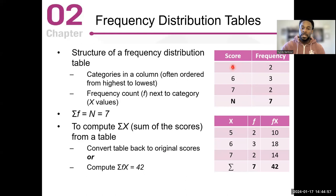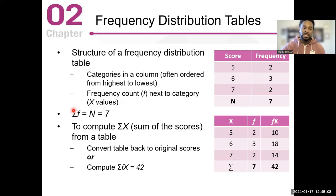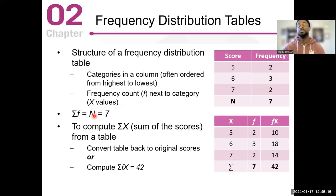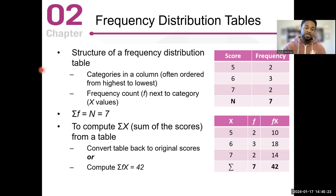When you look at the summations, you're adding your frequencies to get your big N. Big N, if you recall from Chapter 1, is the total number for a population. Had this been a small n, this would be a sample. So essentially this is a population, and the total number is seven — the total number of frequencies.